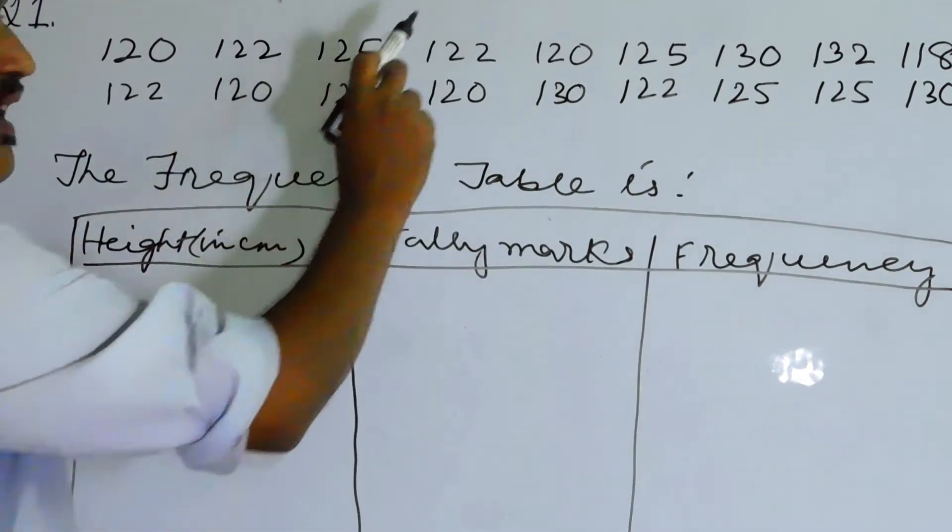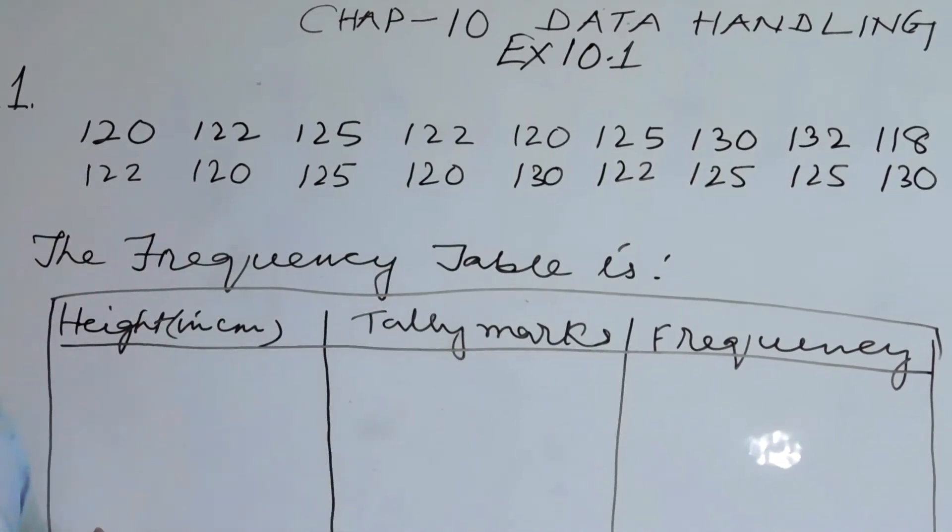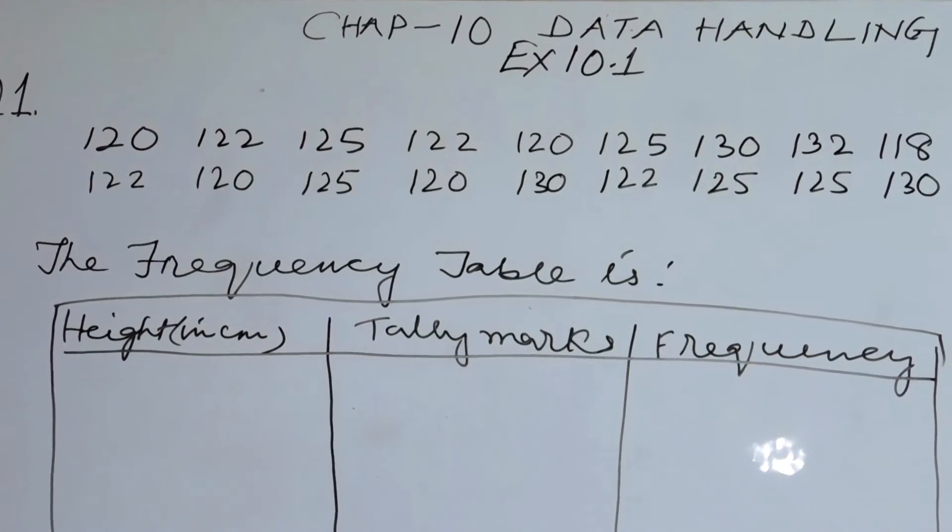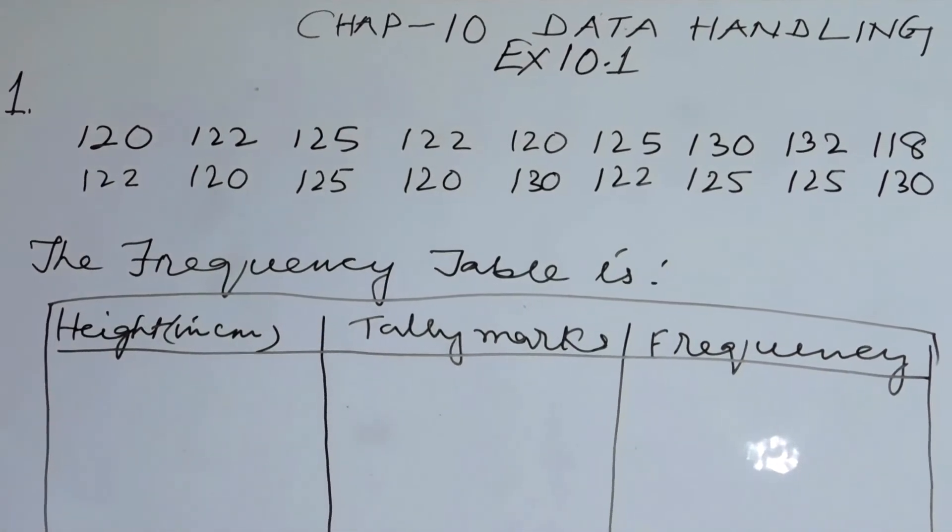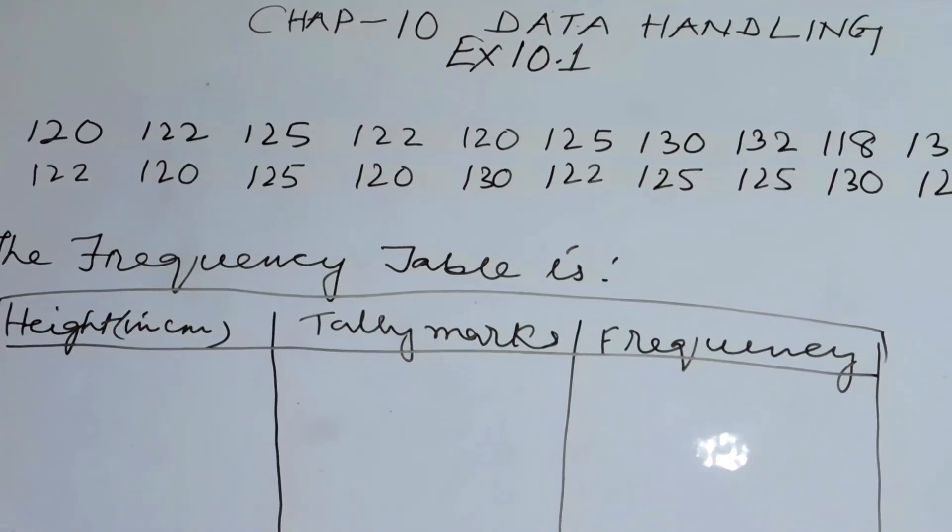Okay children, today let's do exercise 10.1. Now 10.1 question number one. I'm not writing down the question but I will read out: prepare a frequency table distribution for the height in centimeter of 20 people using tally mark.